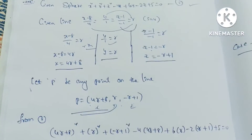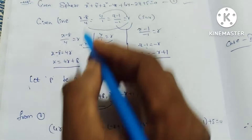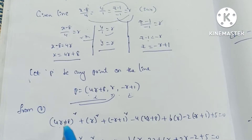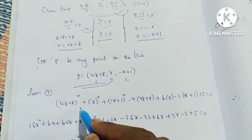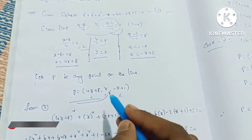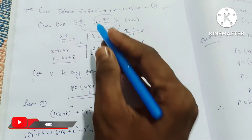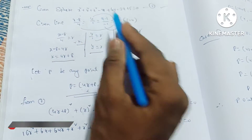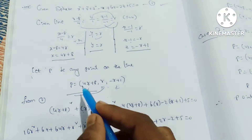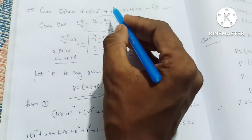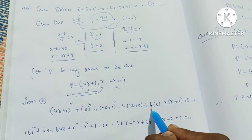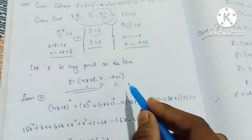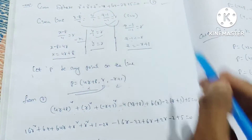I will substitute these points in the sphere equation. From this, x squared: x is equal to 4r plus 8. That is, (4r plus 8) whole square plus y squared, y is equal to r, so r squared, plus z squared, (minus r plus 1) whole square, minus 4x, that is minus 4(4r plus 8), plus 6y, 6 into r, then minus 2 into z, minus r plus 1, plus 5 is equal to 0.